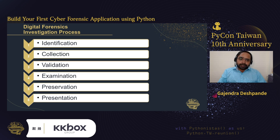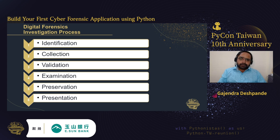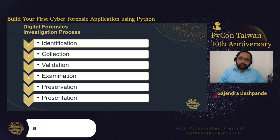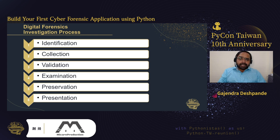The digital forensics investigation process involves six steps. The first is identification, where the investigation officer visits the crime location, identifies various objects, and seizes them. When collecting those objects, they must be stored in proper bags such as antistatic bags or Faraday bags. Investigators need to ensure all objects are collected — sometimes pen drives can be disguised as toys and may be missed, so even such items need to be closely identified and collected.